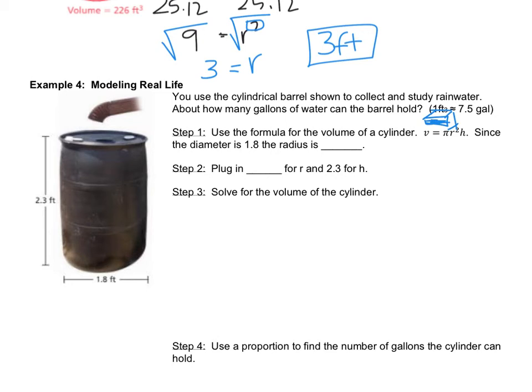So it tells the steps: we're going to use the formula for the volume of a cylinder. So let's write that out: V equals πr²h. And it says since the diameter is 1.8, what's the radius? We talked about that in an earlier example. The radius is half the diameter, so that would be 0.9. So 0.9 is our radius. So now it says to plug in 0.9 for r and 2.3 for h because if you look at the picture, we've got 2.3 is our height and they tell us that the diameter is 1.8, so this is 0.9.